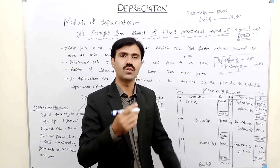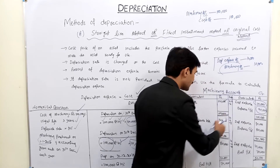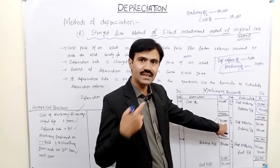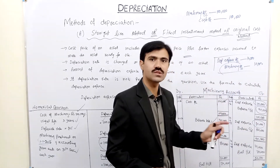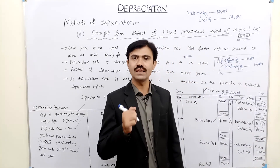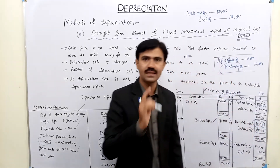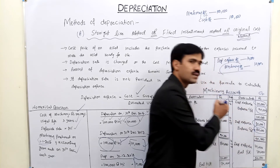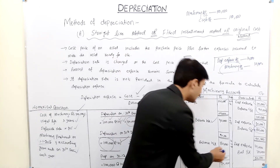The balance carried down is the closing balance, and next year it becomes the balance brought down — the opening balance. In the second year, depreciation expense is again 10,000. Adding 10,000 to the credit side makes the total 10,000, and the balance carried down is 90,000 minus 10,000, which equals 80,000.